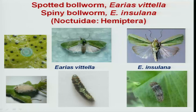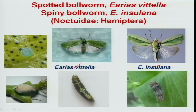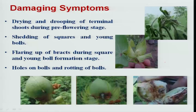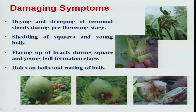The spotted bollworm includes two species — Erias vittella and Erias insulana. It causes much damage and has recently damaged BT cotton in some pockets. It also damages squares, acts as a shoot borer at early stages, and bores into developing bolls at later stages.